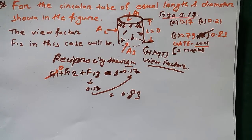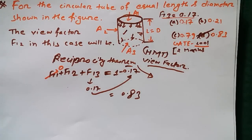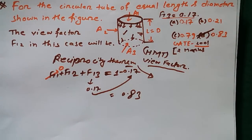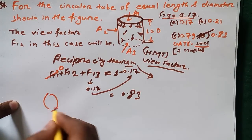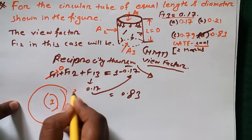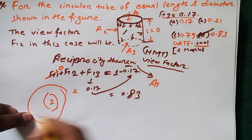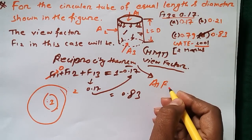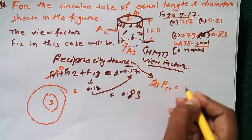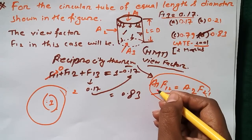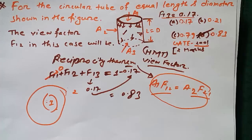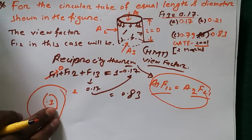Before going to solve the next question, let me share what the reciprocity theorem is, because the next question is based on it. If we have body 1 and body 2, the reciprocity theorem states: A1 · F12 = A2 · F21. This is known as the reciprocity theorem, and now let me show you how to use it for numerical problems.